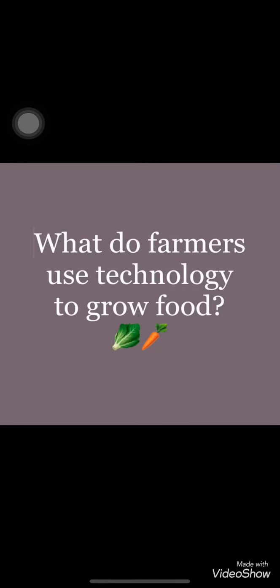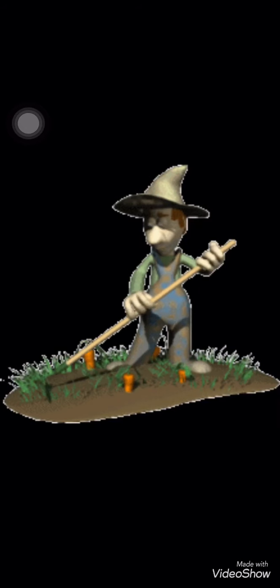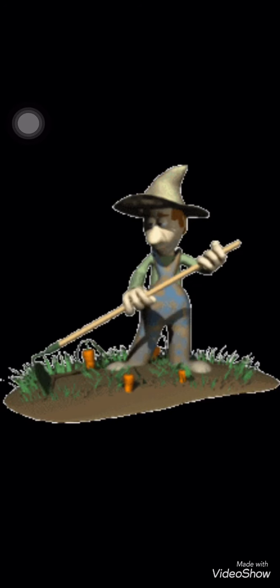Chapter 12: what do farmers use? Farmers use technology to grow food. Machines help farmers grow food. Machines are one kind of technology. Technology is the use of scientific knowledge to solve problems.